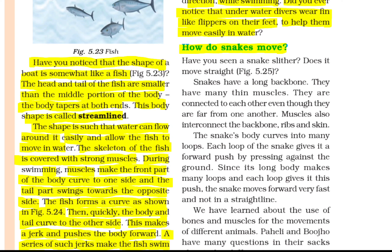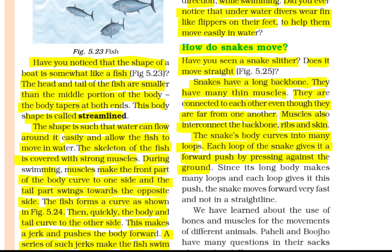How does a snake move? Have you seen a snake slither? Snakes have a long backbone and many thin muscles connected to each other. Muscles also interconnect the backbone, ribs, and skin. The snake's body curves into many loops. Each loop gives it a forward push by pressing against the ground. Since its long body makes many loops and each loop gives it a push, the snake moves forward very fast — not in a straight line.